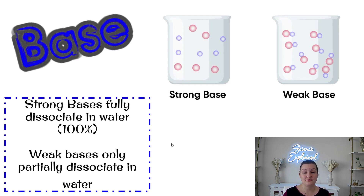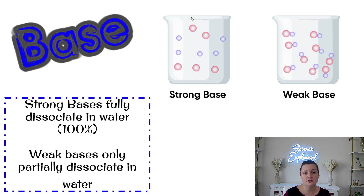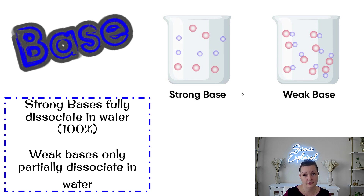Now let's talk about bases. Bases are similar to acids in terms of dissociation. Strong bases fully dissociate in water 100%, and weak bases only partially dissociate. In a strong base, all molecules are separated out into cations and anions. In a weak base, none or very few have dissociated. If there is partial dissociation, with some separated and some still in molecular form, then it would be a little stronger — somewhere in between.